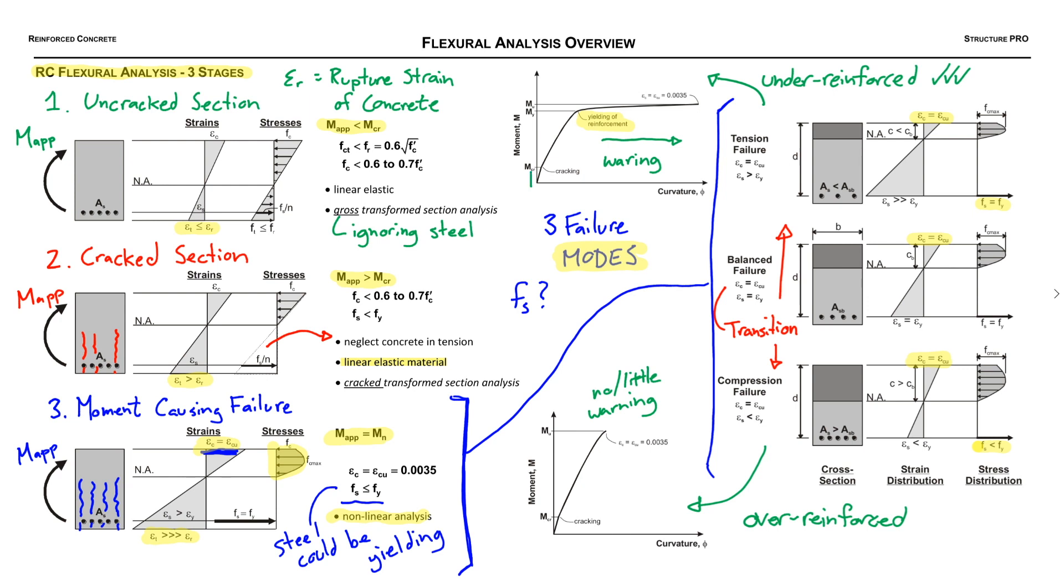At this point let's pay closer attention to this moment curvature diagram at the top here and we can actually identify these three stages of behavior in the moment curvature diagram. So stage one, and draw a box around it, that's before cracking. Stage two is this kind of semi-linear portion here after cracking, normally when the beam is in service, and stage three, it's really not a stage. It's a single point. It's the point of failure and it corresponds to obviously the three diagrams we have on the right.